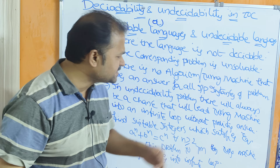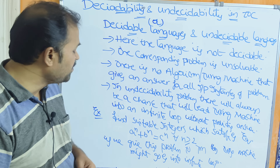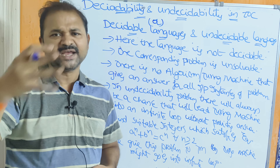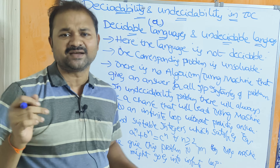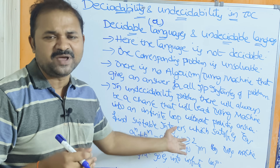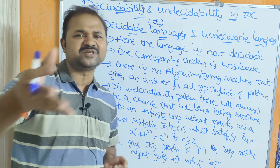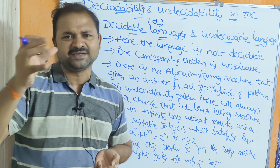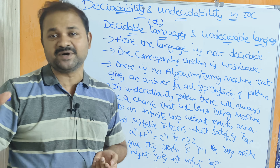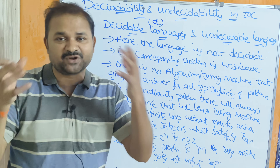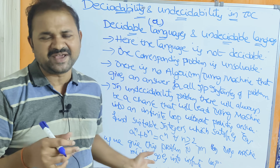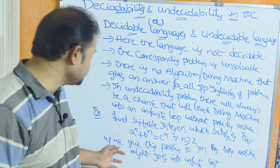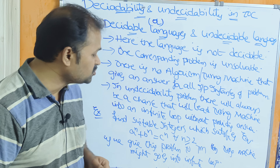For example, find suitable integers which satisfy the equation a^n + b^n = c^n for all n greater than or equal to 2. Here n can be any number — suppose a is 100,000, b is 200,000, then c might be 300,000, so that condition holds, and it will produce many outputs. But since we have infinite integers, what is the last number? It is infinite. So after producing some outputs, the Turing machine will go into an infinite loop and won't produce all possible outputs. That is why if we give this problem to a Turing machine, it might go into the infinite loop.